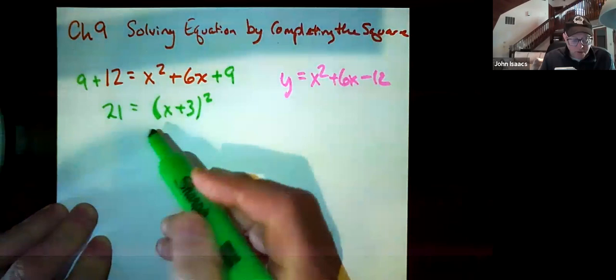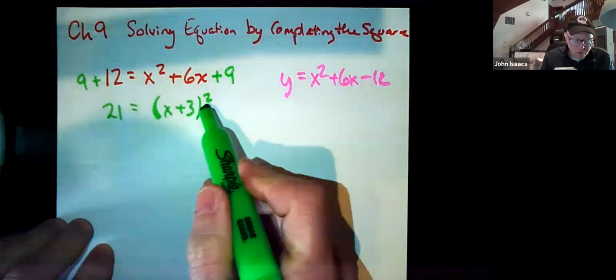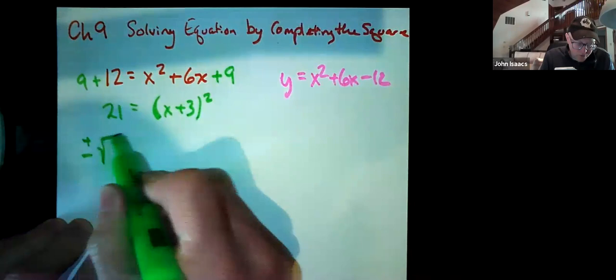And then to solve, this is now like one of the equations in the first video, kind of in quote unquote vertex form a little bit. To solve, we're going to take the square root of both sides.